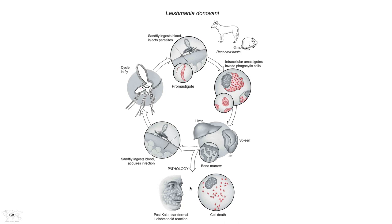We also see a consequence of partial therapy or a particular genetic background that does not allow complete resolution of the infection. As a result, we have something called post-kala-azar dermal leishmanoid reaction. The word kala-azar is a Hindu word for black lesion, and this results in a black lesion — under the skin, in places with certain collections of macrophages, the skin darkens, associated with a heavy infection from Leishmania donovani.